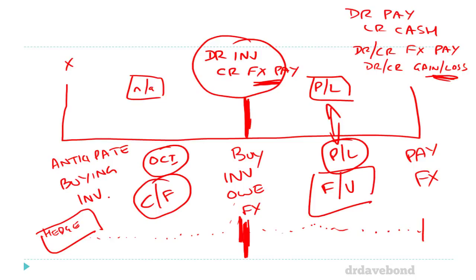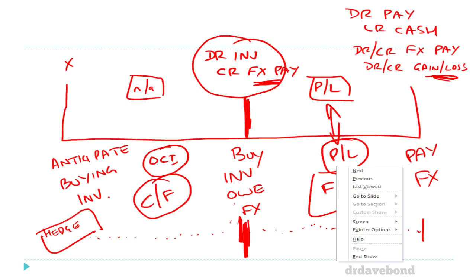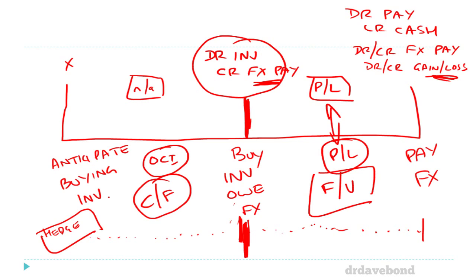For a fair value hedge, changes in the derivative go to profit and loss, offsetting the profit and loss effect from the hedged item. For a cash flow hedge, because there's no profit and loss effect in the underlying before the transaction, the derivative changes go through OCI — putting them through profit and loss would create volatility we don't want. For example, if the underlying led to a loss of 20 in the fair value period, and the derivative gave a gain of 18, we'd show an overall loss of only 2 rather than the full 20.